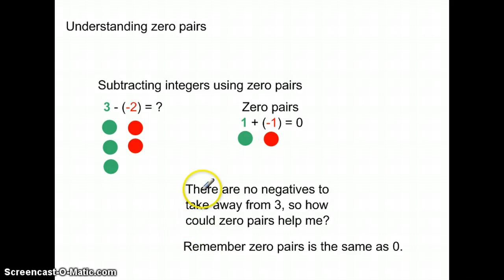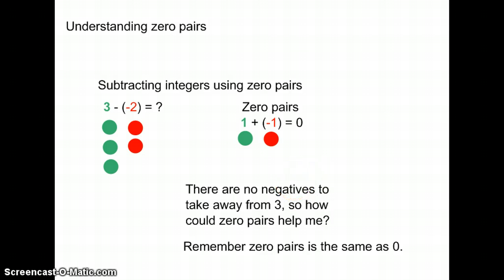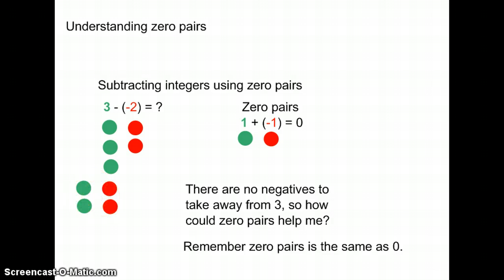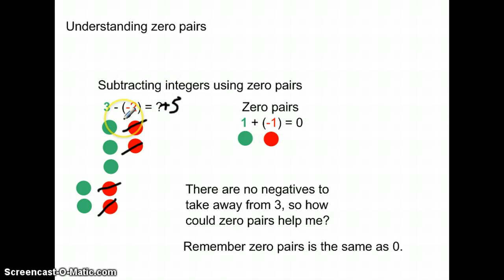I hope you've thought about this. Let's take a look. I have to take away negative 2, but there aren't any negatives here to take away from. I can add zero pairs to help me do this. So let's bring in two zero pairs — I brought in two zero pairs because I need two negative tiles. Remember, a positive and a negative cancel each other out. Now I can take this tile away and this tile away. What I'm left with is 3 plus 2 — 5 positive tiles.